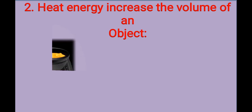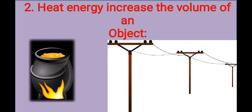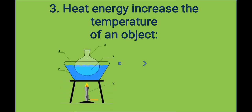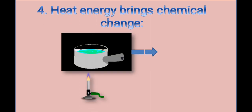Effects of heat: Heat energy changes the physical state of matter. Heat energy increases the volume of an object. Heat energy increases the temperature of an object. Heat energy brings about chemical change.